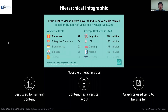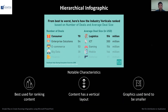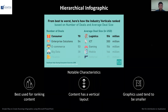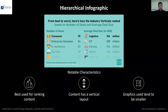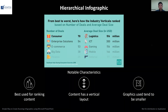For a hierarchical infographic, you tend to have quite a number of items on the list. Unless you're comparing between three or four items, if there's going to be five or more, you'll notice that your graphics tend to be a lot smaller. What that means is that the graphics cannot be so complex for this kind of infographic.